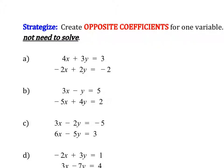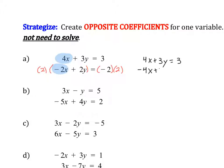We're going to focus on our x terms. Our goal is to turn negative 2 into negative 4 so they become opposites. We can do that by multiplying the entire equation by 2. Rewriting both equations: we still have 4x plus 3y equals 3. Then 2 times negative 2 is negative 4x, 2 times 2y is positive 4y, and negative 2 times 2 is negative 4. By multiplying our bottom equation by 2, we created opposite coefficients: positive 4 and negative 4.